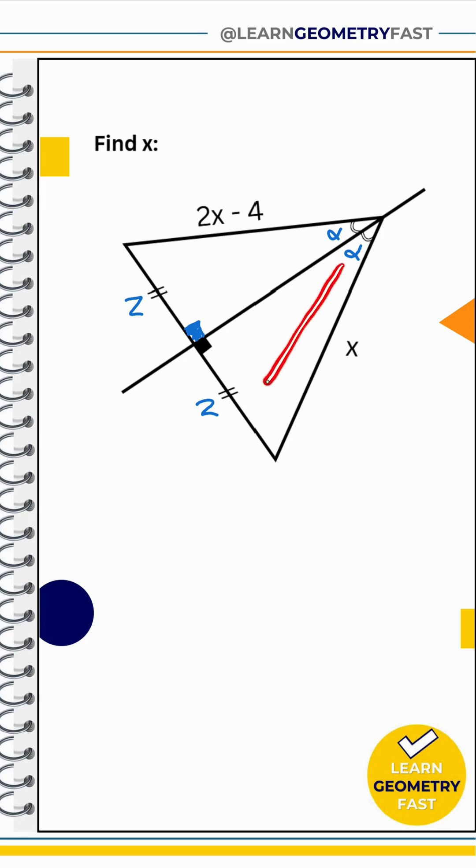And with that, we can see this, right? That's going to be proportional because we have angle-angle, which means that these two triangles right here are congruent. So let's go ahead and note that we have Z over 2x minus 4 equals Z over x.